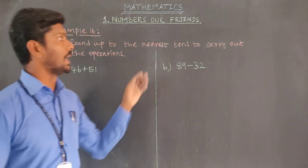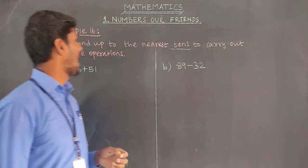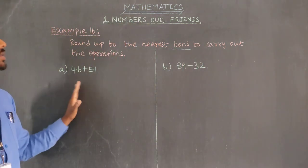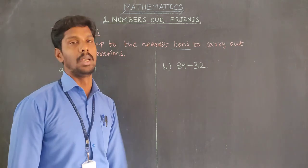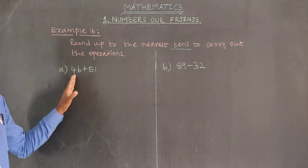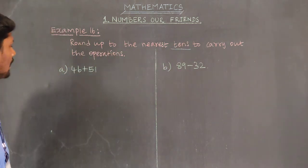Round up to the nearest tens to carry out the operations. 46 plus 51, 89 minus 32. Here are the numbers. Round up to the nearest tens to find our approximate value.